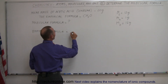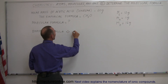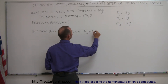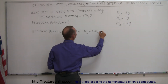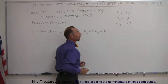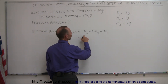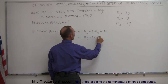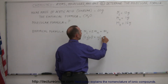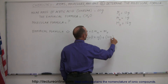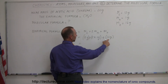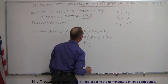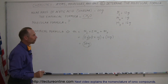We want to find the mass, which is equal to one carbon atom — so the mass of one carbon — plus twice the mass of hydrogen, plus one time the mass of oxygen. The molar mass of carbon is 12 grams, plus two times the molar mass of hydrogen, which is 1 gram, plus the mass of oxygen, which is 16 grams. When we add all that together, we get 12 plus 16 is 28, plus two times one is 30 grams. So if this was the molecular formula, we would have a mass of 30 grams per mole.